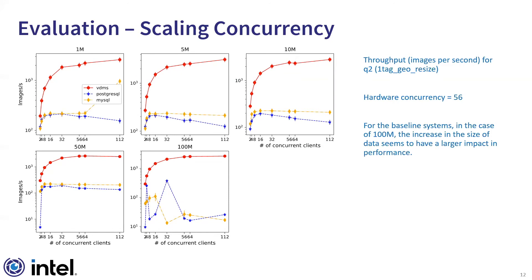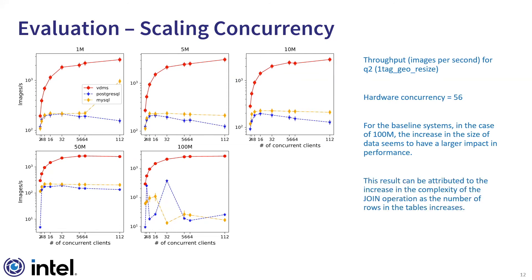For the baseline systems in the case of 100 million images, the increase in the size of data seems to have a larger impact on performance. In this case, PostgreSQL has a performance spike at 32 clients, and the performance for both baselines is less stable when compared to VDMS. This result can be attributed to the increase in the complexity of join operations as the number of rows in the tables increases.